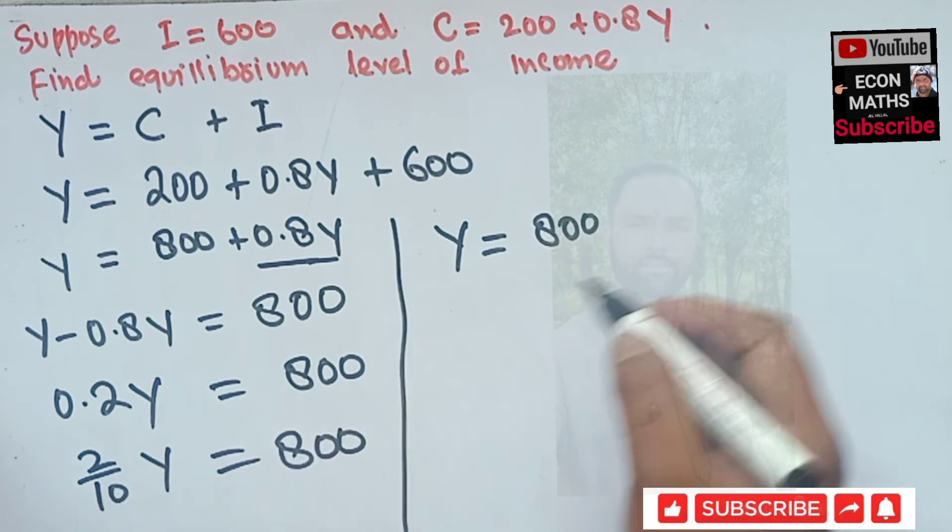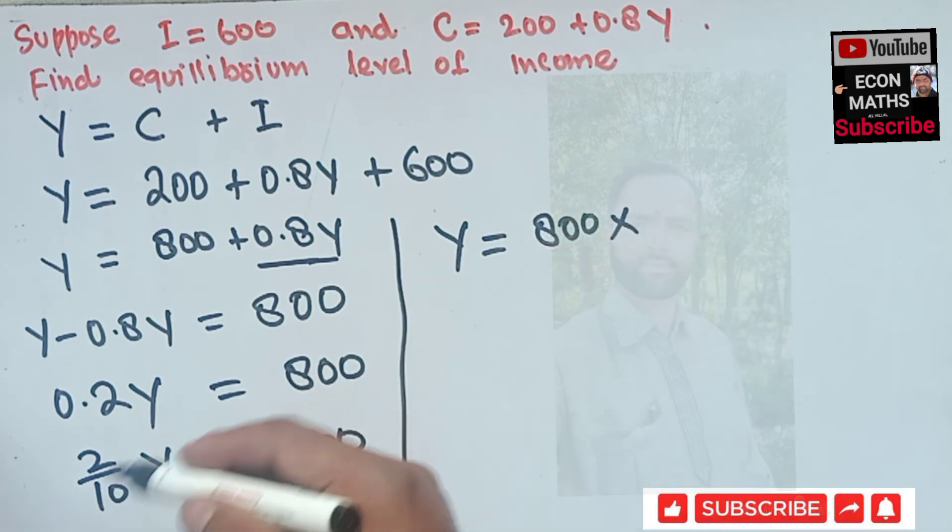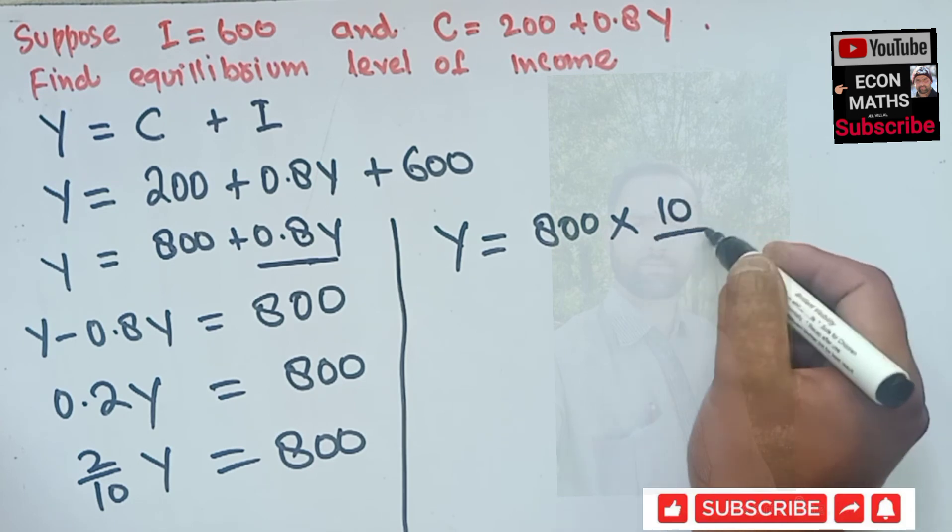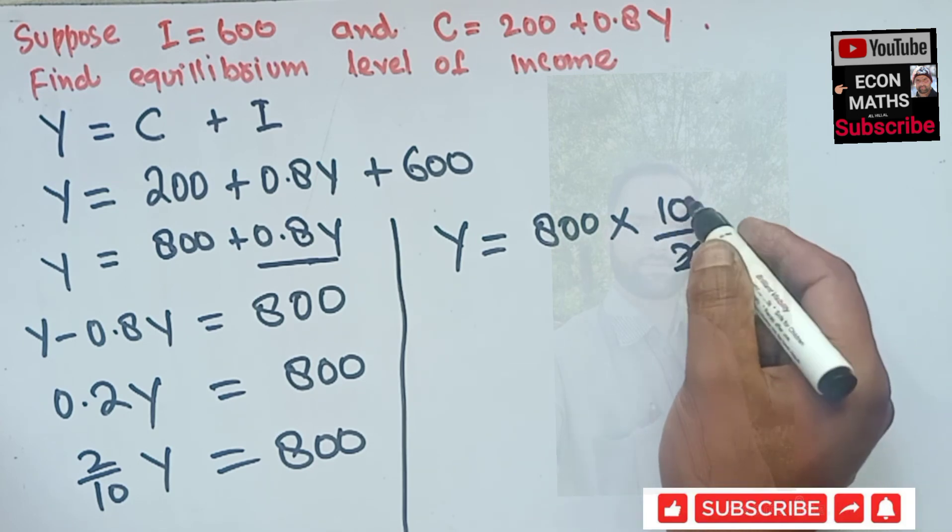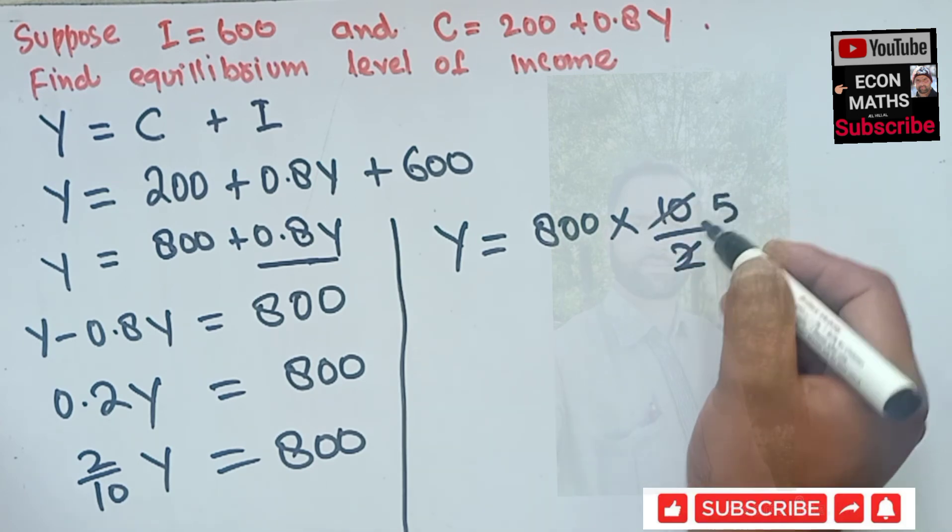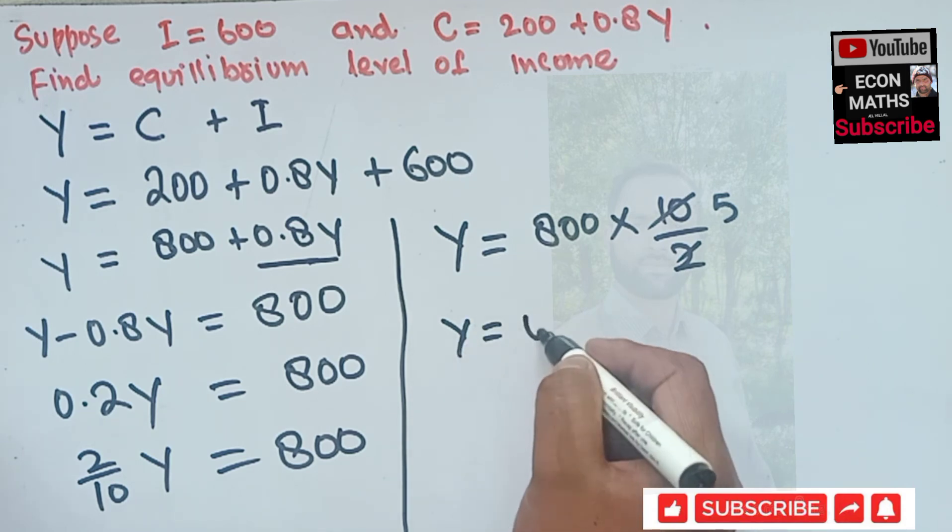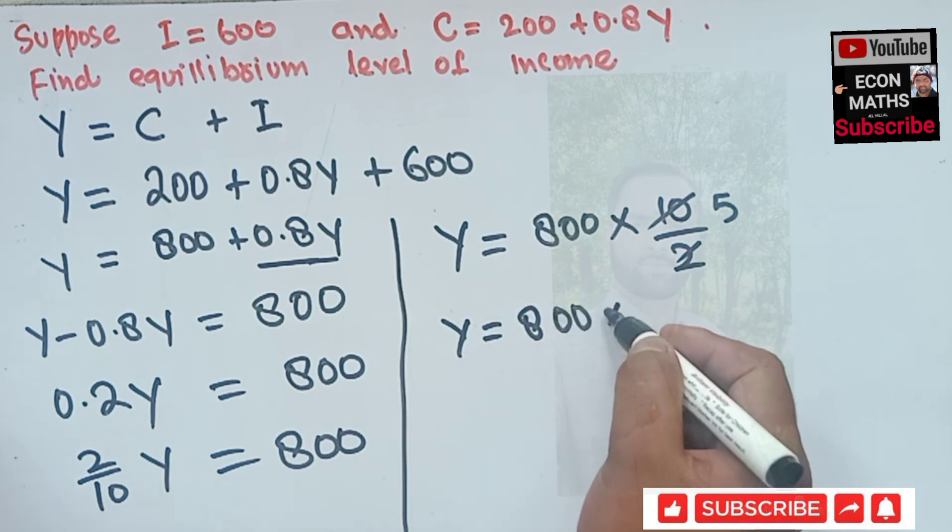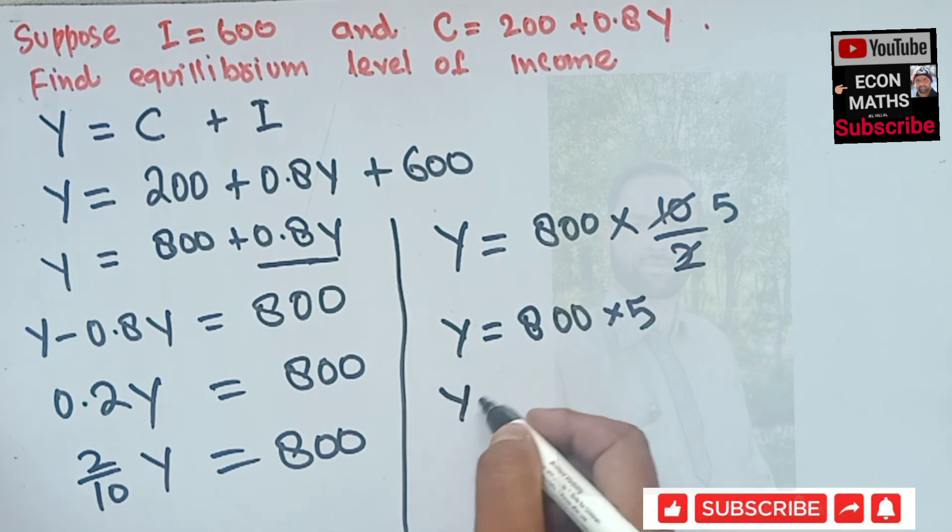Or our Y is equal to 800. We will transpose this term on RHS; this will get a reciprocal. This will become 10 divided by 2, which is 5. Or we have Y is equal to 800 into 5, which comes out to be 4000.